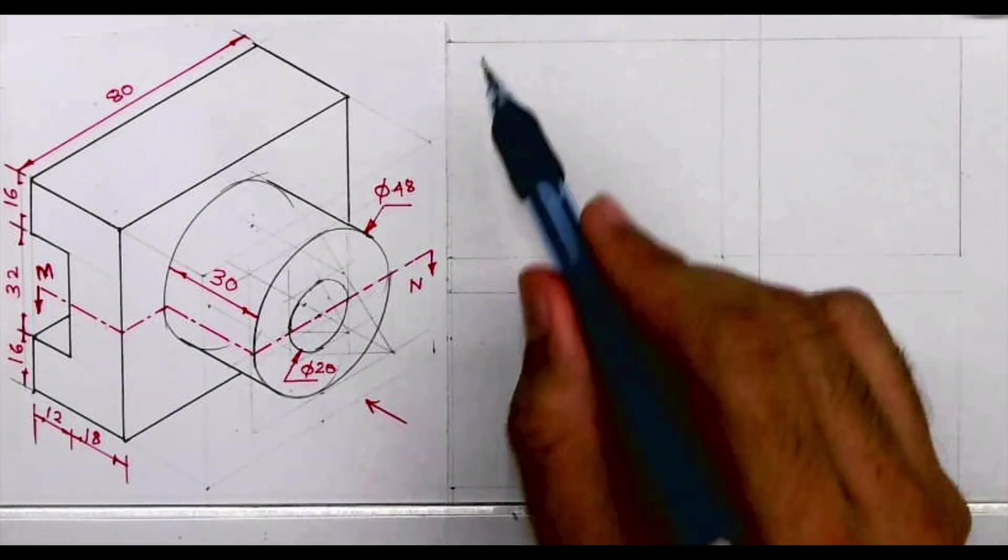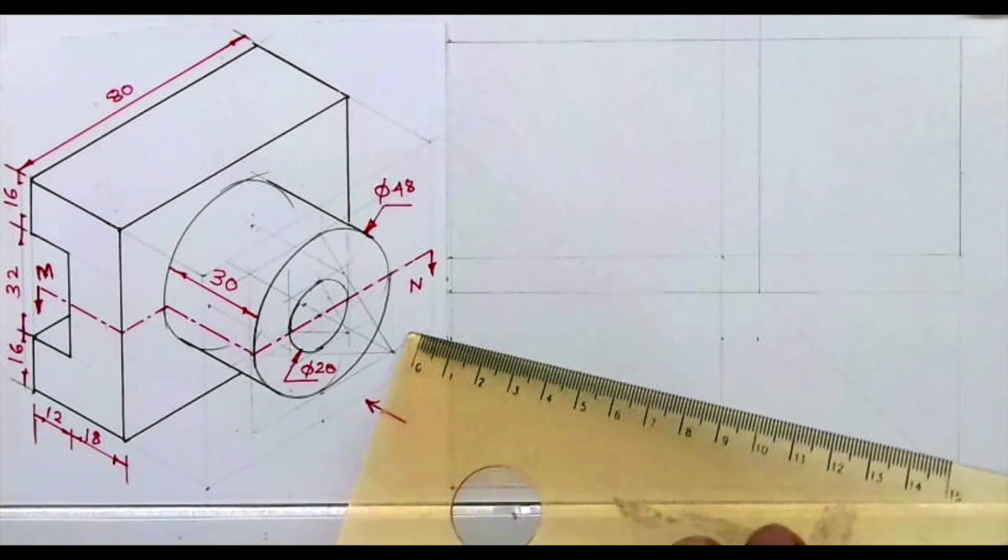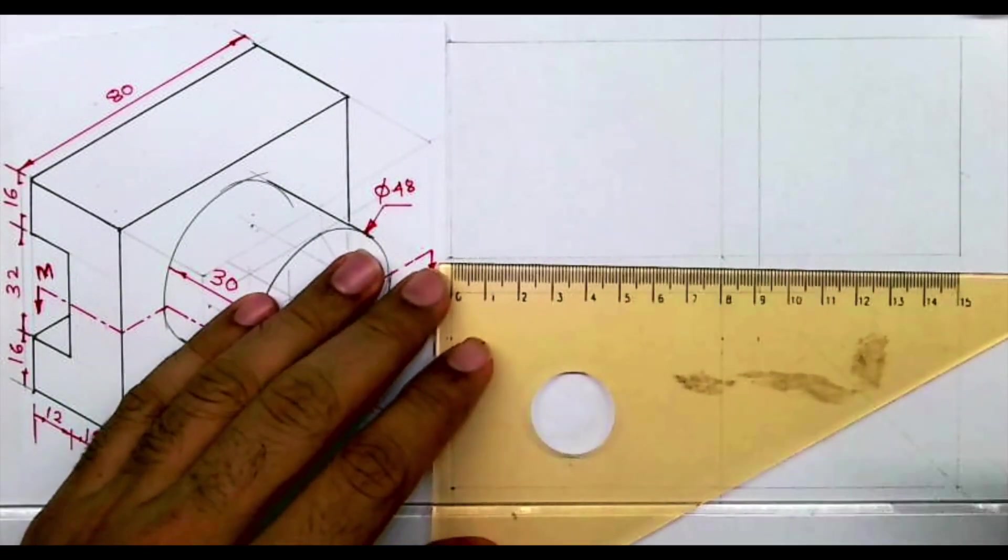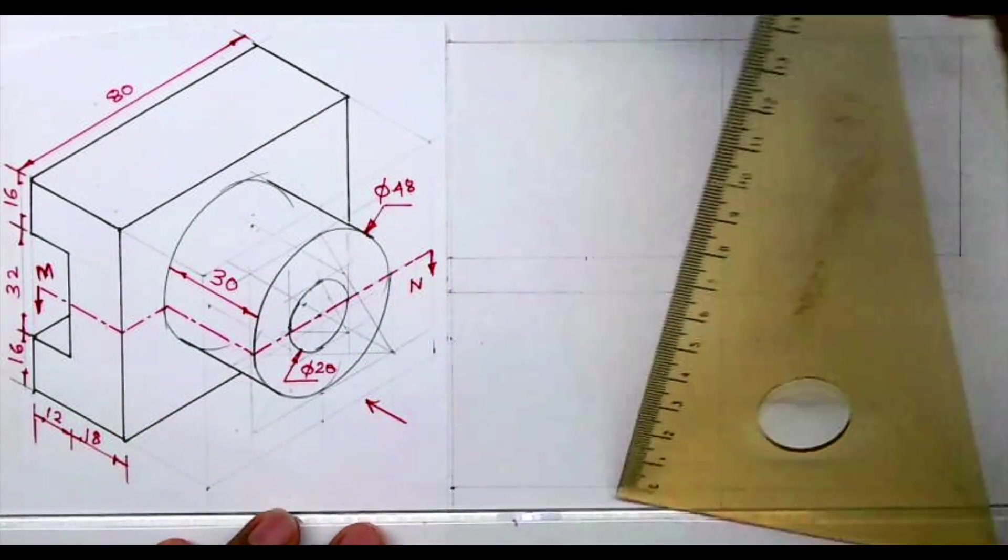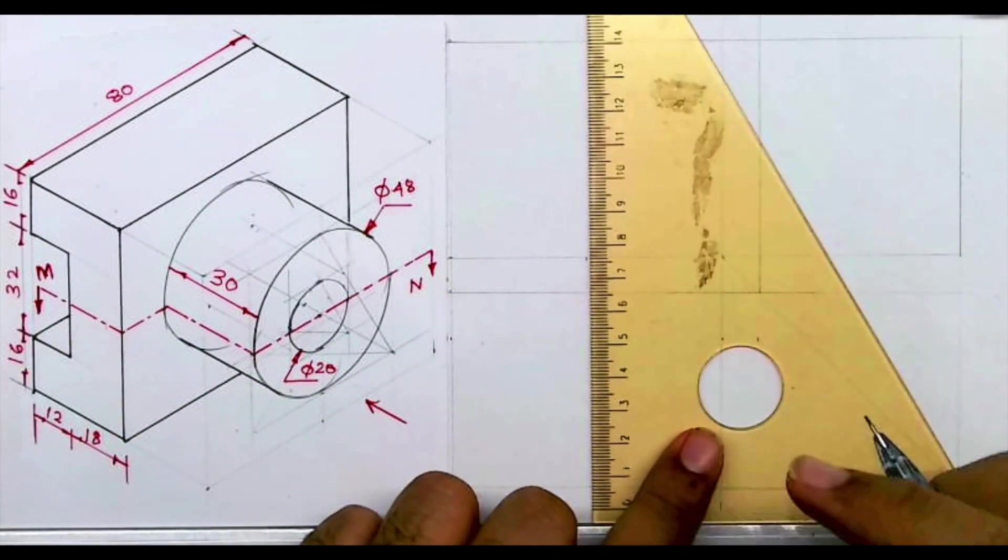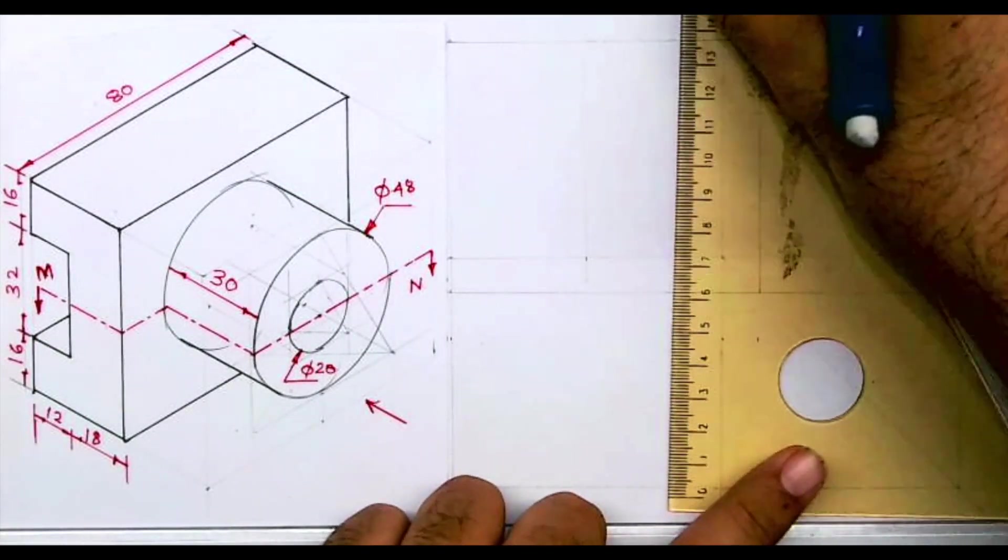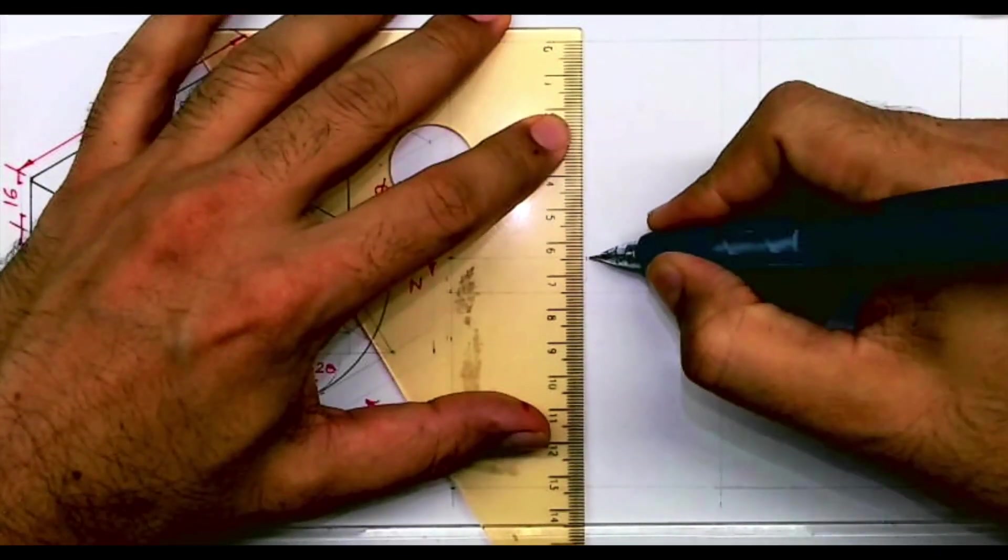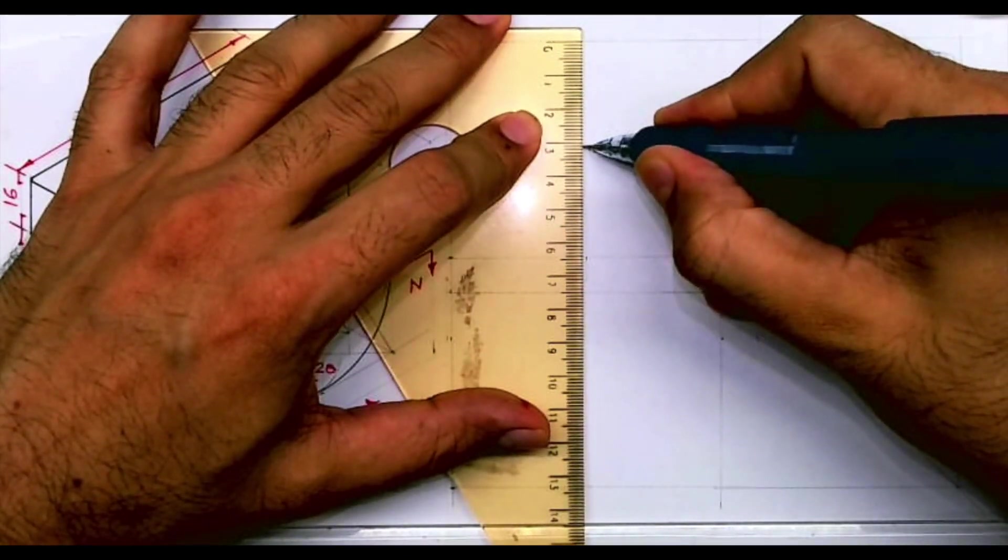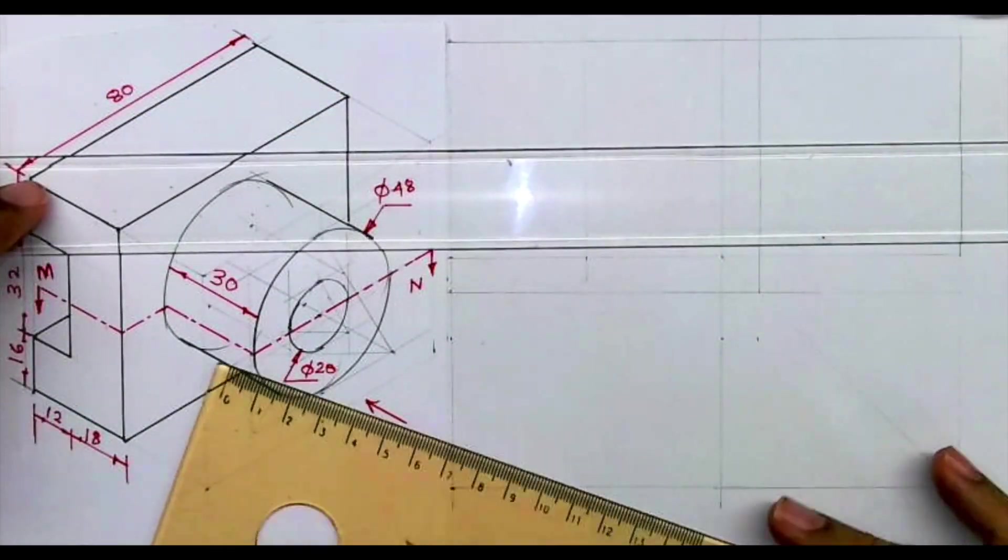So first we will draw layout and now we'll start with front view. In that first we will draw a circle. We'll take midpoint, we'll draw vertical line. We'll take half of it so it will be 32. This is 64, so you take 32 and from that point we'll draw radius 24.